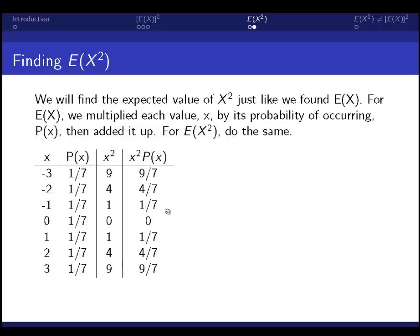Now we just want to add all these numbers up. We get 28 over 7. That is our expected value of x squared.